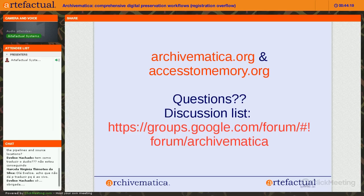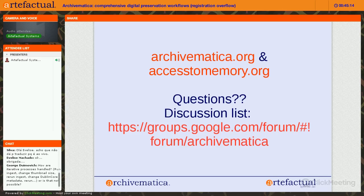Another question: where would you look to find information on setting up different pipelines and different storage situations? All of the storage and transfer source locations are set up through a separate application called the storage service. If you go to the Archivematica.org website and click on documentation, you'll see links not just to Archivematica documentation but also to storage service documentation. We would also welcome your questions on the user forum.